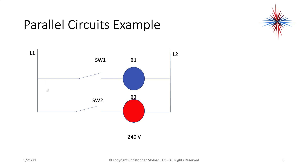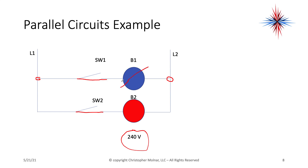This is an example of a parallel circuit. Currently switch one and switch two are open, so there's no current flow. If I close switch one, bulb one begins to operate and gets full source voltage, connected from L1 to L2. Bulb two is not running because switch two is open. If I close switch two, I now have a path from source without going through another load, so both bulbs operate. If bulb one burns out, bulb two keeps running.